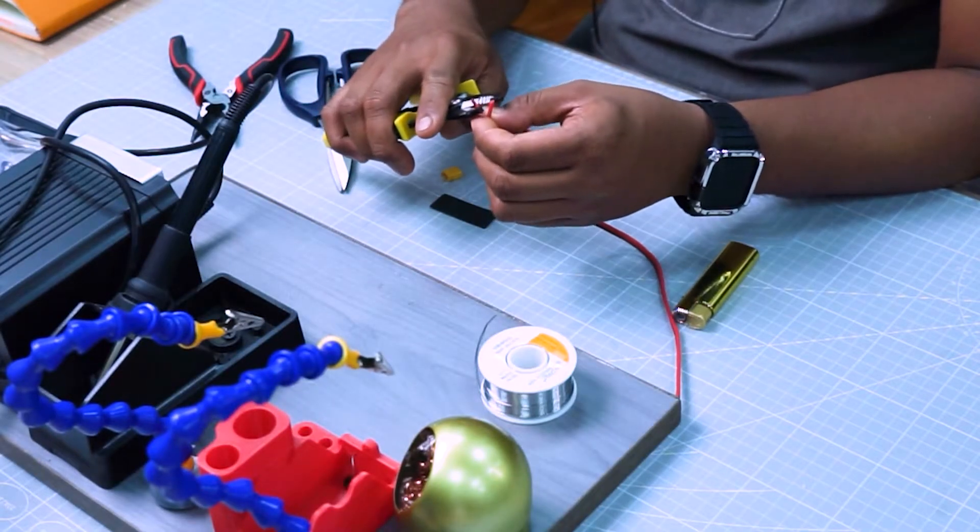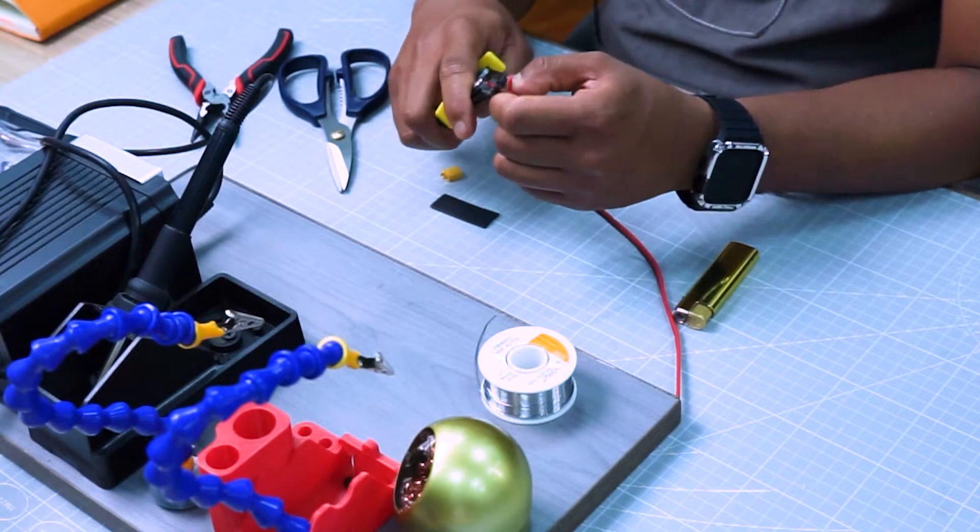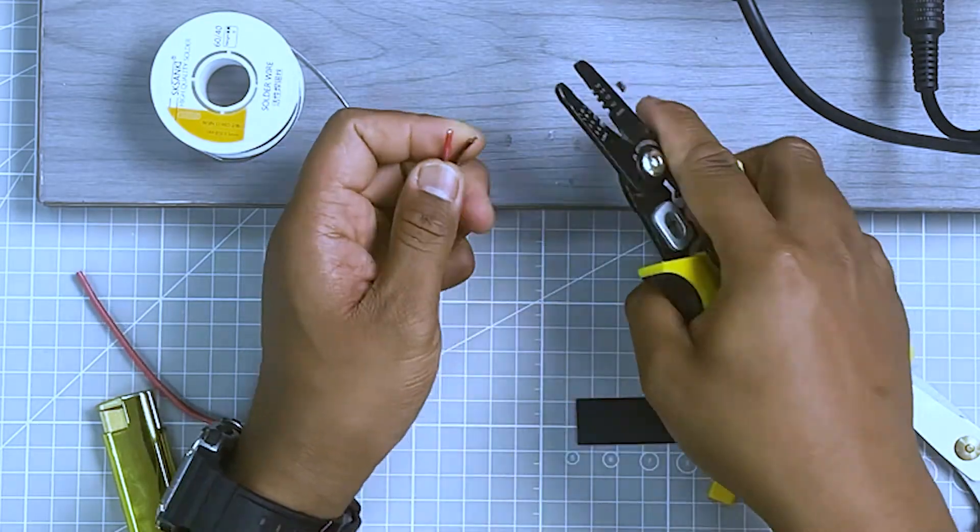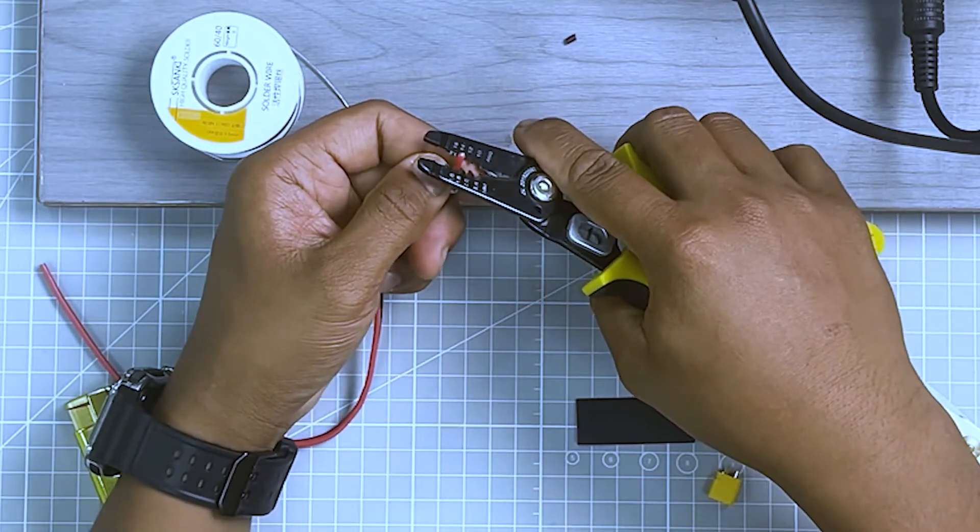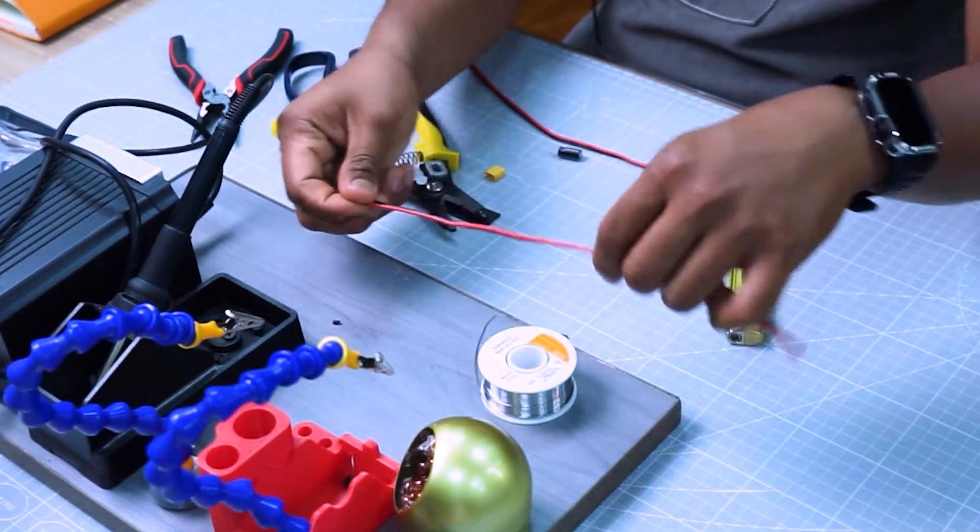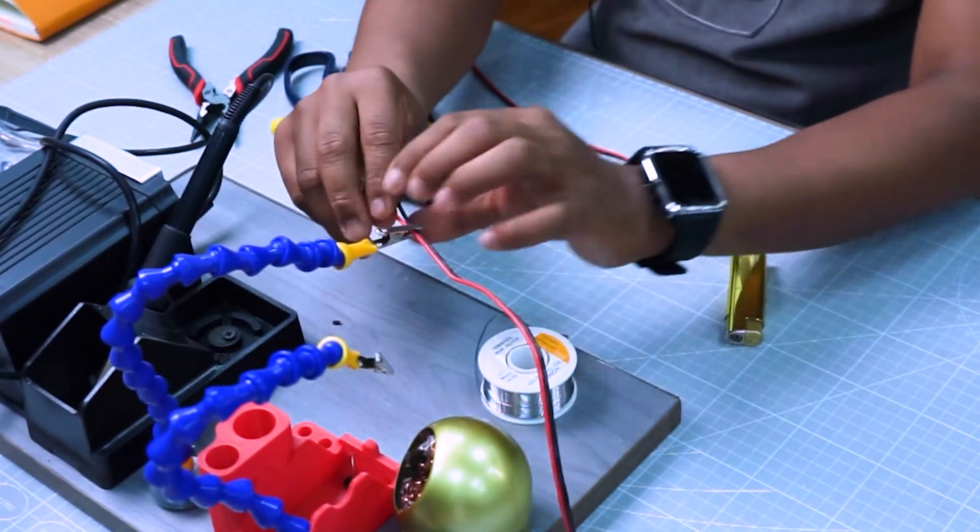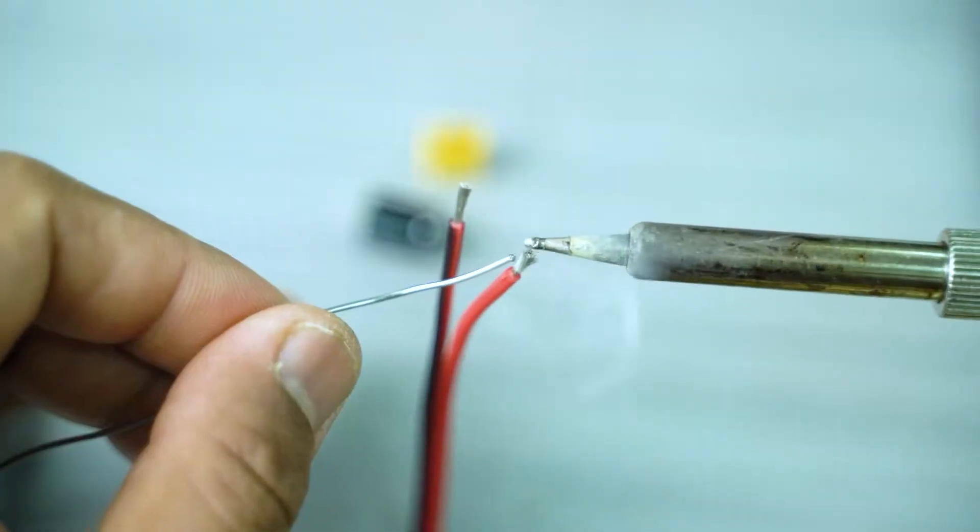Let's start by stripping the insulator on the two wires. Expose enough wire copper to apply the soldering lid. Apply soldering lid to the wire conductor. This will make our soldering joint easier later.